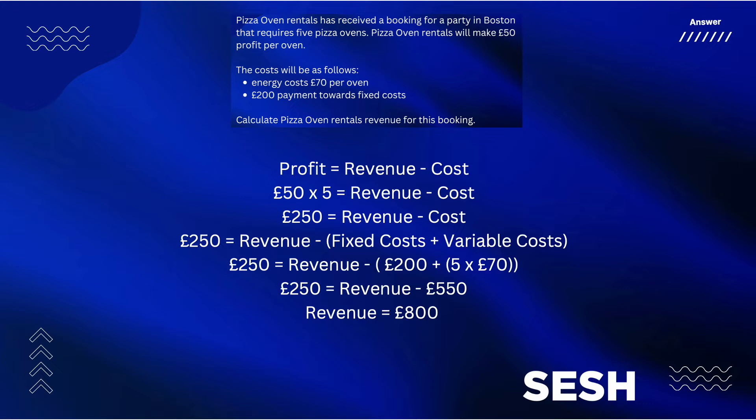Profit equals revenue minus cost. Profit — as given in the question — you make £50 profit per oven, times by five because there's five ovens. That's £250.